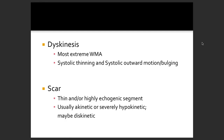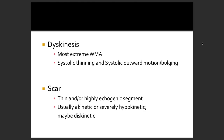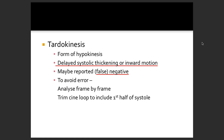Dyskinesia is systolic thinning and systolic outward bulging — do not mix these terms: hypokinesia, akinesia, and dyskinesia. There can also be scar, which is completely akinetic, severely hypokinetic, or dyskinetic. Tardokinesis is a form of hypokinesis with delayed systolic thickening or inward motion, and may be reported as false negative. To avoid this error, always analyze frame by frame.